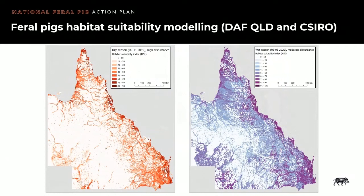Current pig distribution maps are very coarse. The Department of Agriculture and Fisheries Queensland is working with CSIRO to refine models of feral pig habitat, estimate densities and map this habitat in Queensland. This will help identify areas for control and management and for computer simulation modelling of disease spread and management, including African swine fever. This slide shows draft maps of seasonal habitat suitability for feral pig breeding in Queensland — a late dry season using data for September to November 2019 and a late wet season using data for March to May 2020. These models will continue to be refined, including learnings from pig movement analysis being undertaken.